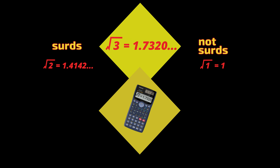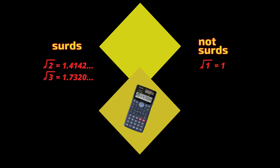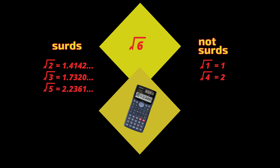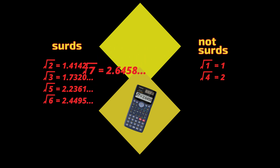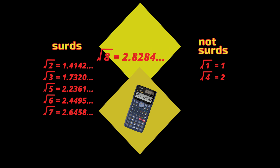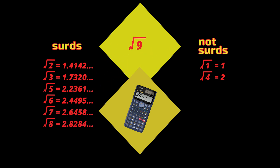Just like the square root of 2, the square root of 3 is 1.7320 and so on. It is also written as a surd, which assumes its exact value with all of its decimal numbers and without the inconvenience of having to write all of the decimals. The square root of 4 is the exact whole number 2 — it's not a surd. The square roots of 5, 6, 7 and 8 are surds. The square root of 9 is the exact whole number 3, so it's not a surd.